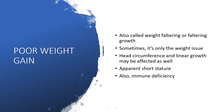Poor weight gain, also called weight faltering or faltering growth — sometimes weight is the only concern, but head circumference and linear growth may be affected as well. The child may present with apparent short stature, and we may also be dealing with immune deficiency.